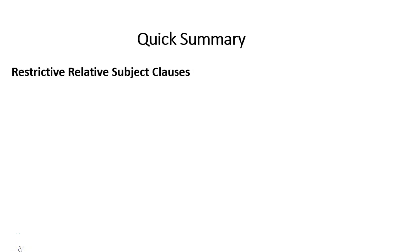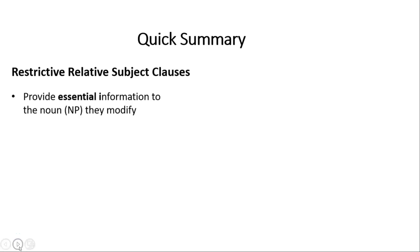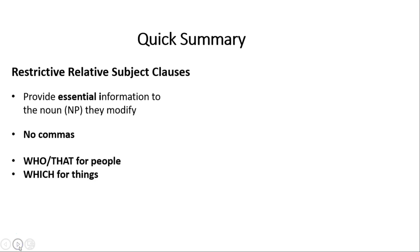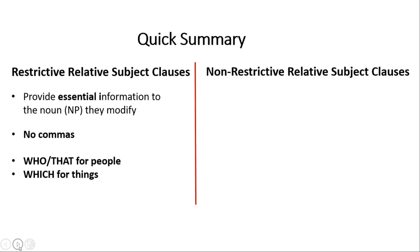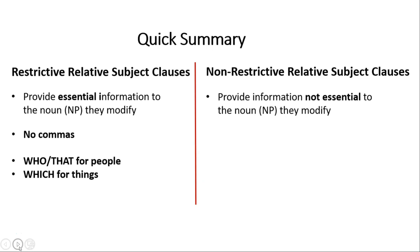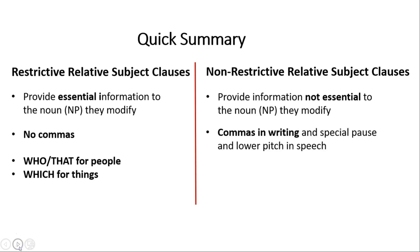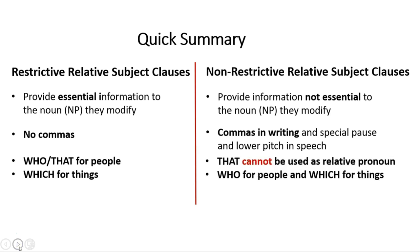Let's summarize the differences. Restrictive relative clauses provide essential information to the noun or subject being modified, use no commas, and allow who or that for people and which for things. Non-restrictive relative clauses provide non-essential extra information, are offset by commas in writing and a special pause with lower pitch in speaking, and can never use that — only who for people and which for things.